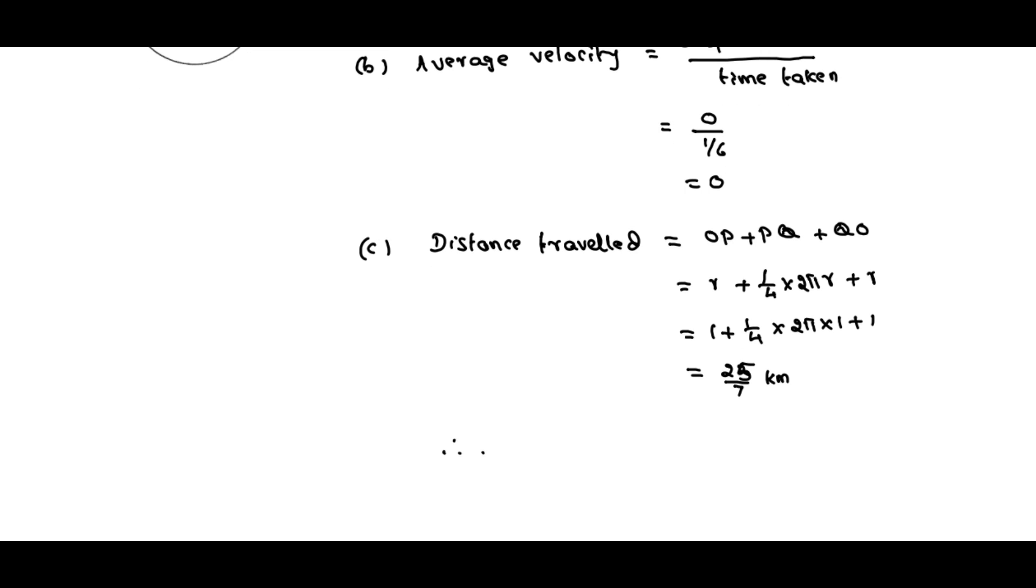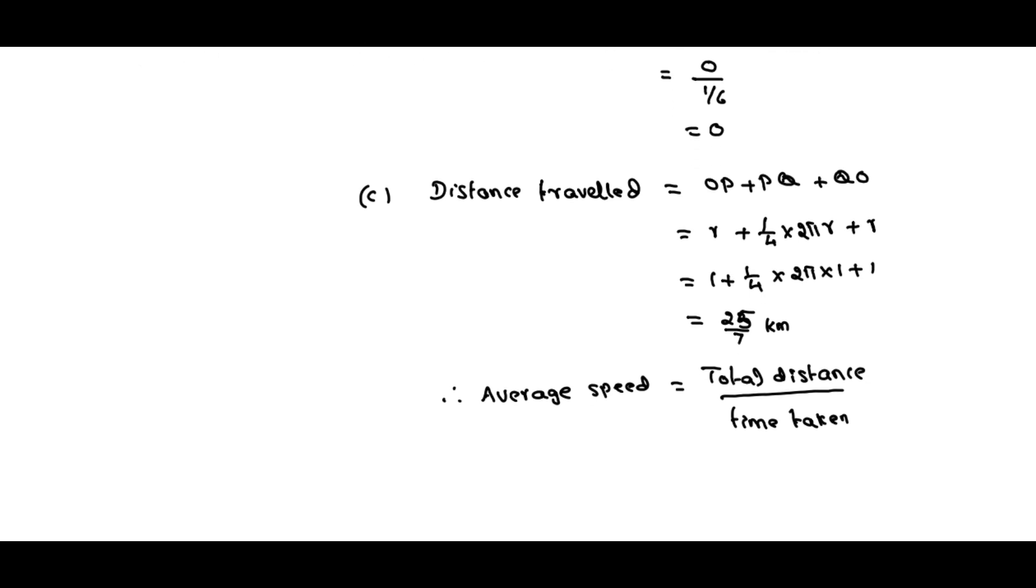Now average speed, average speed is equal to total distance traveled by total time taken. So the distance traveled is 25/7 kilometers, and time taken is nothing but 1/6 hour.